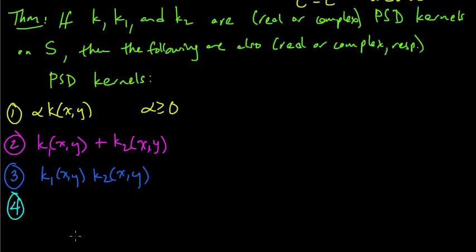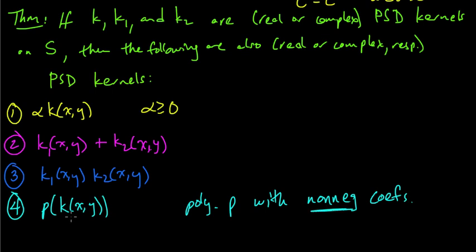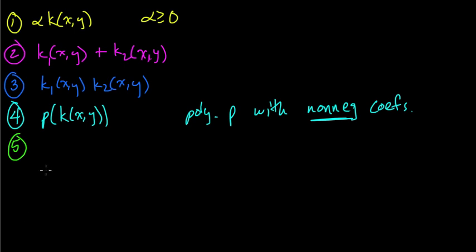Okay, so number four. Number four says that for any polynomial P, if we evaluate that polynomial at the value of the kernel k(x,y), and that polynomial has non-negative coefficients, then we get a new kernel. That's important—non-negative coefficients. So if P was like 1 + x^2, then you'd have 1 + k(x,y)^2. Number five: if we take the exponential, e^(k(x,y)), this is also a positive semi-definite kernel.